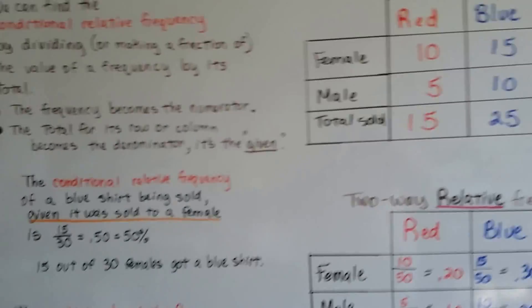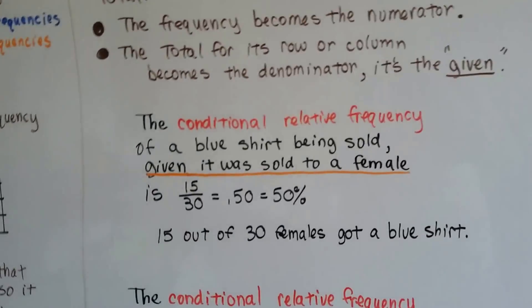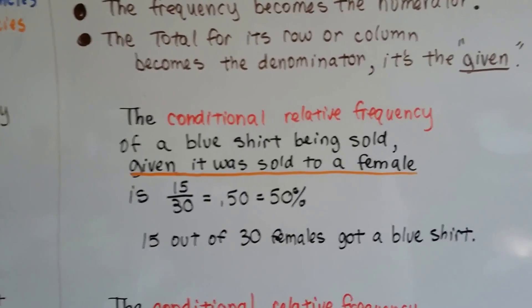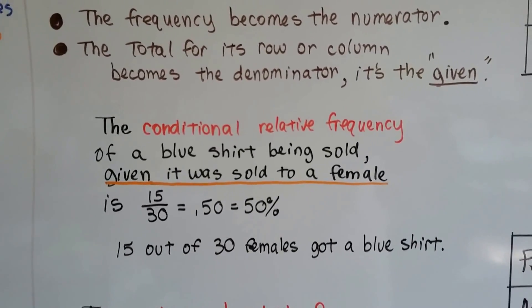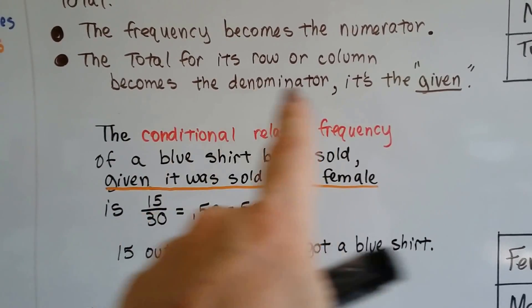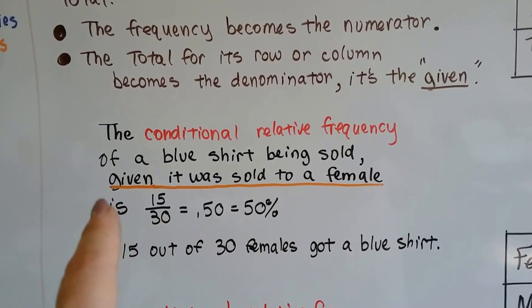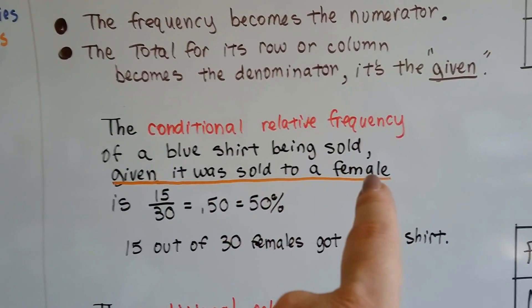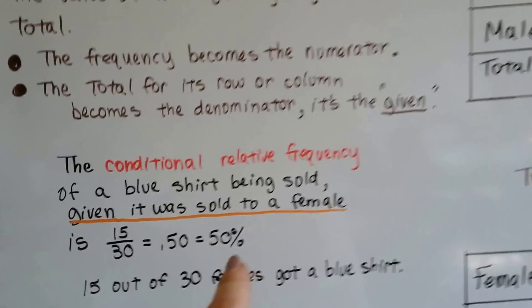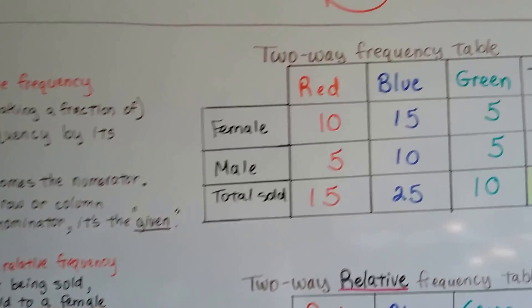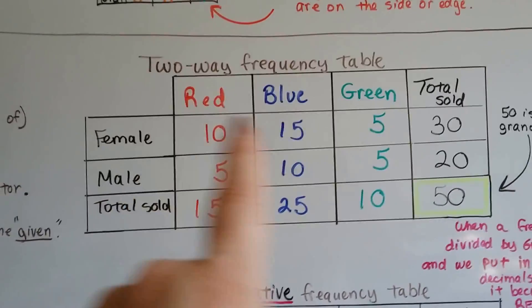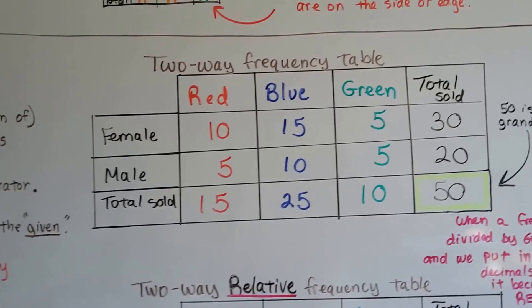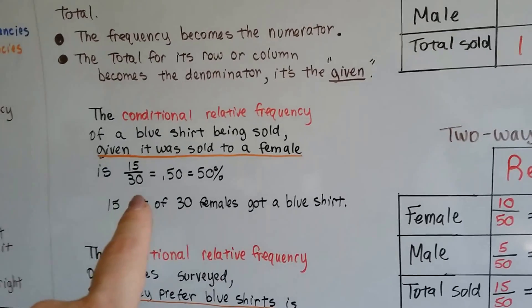Now, the conditional relative frequency of a blue shirt being sold given it was sold to a female. Remember, the denominator is the given. So we look at how many were sold to females. So let's look at our two-way frequency table and find out how many were sold to females. 30. That's going to be our denominator. So we know our denominator is 30.